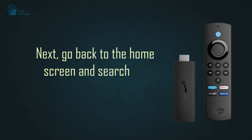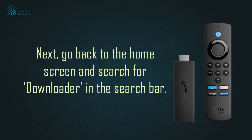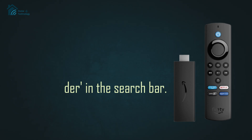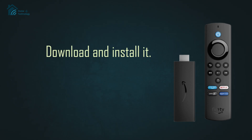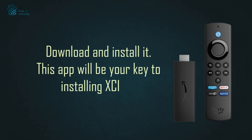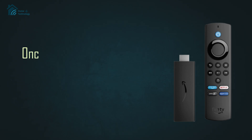Next, go back to the home screen and search for Downloader in the search bar. Download and install it. This app will be your key to installing XeIPTV.